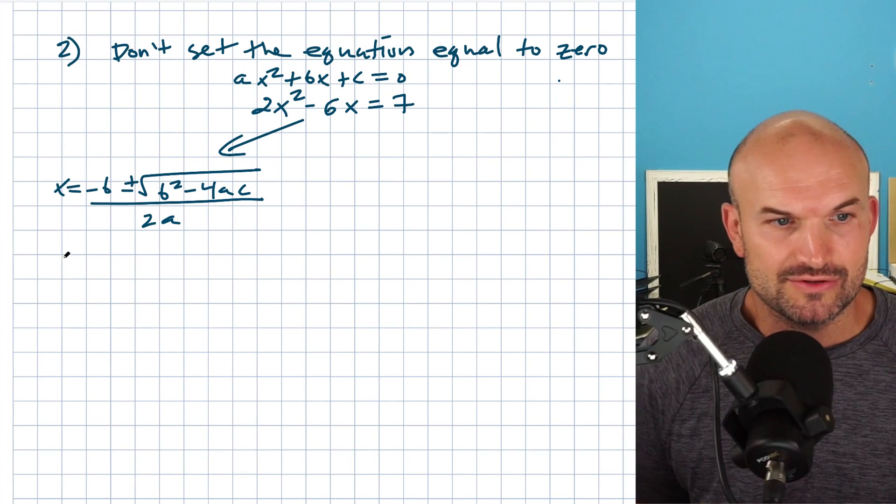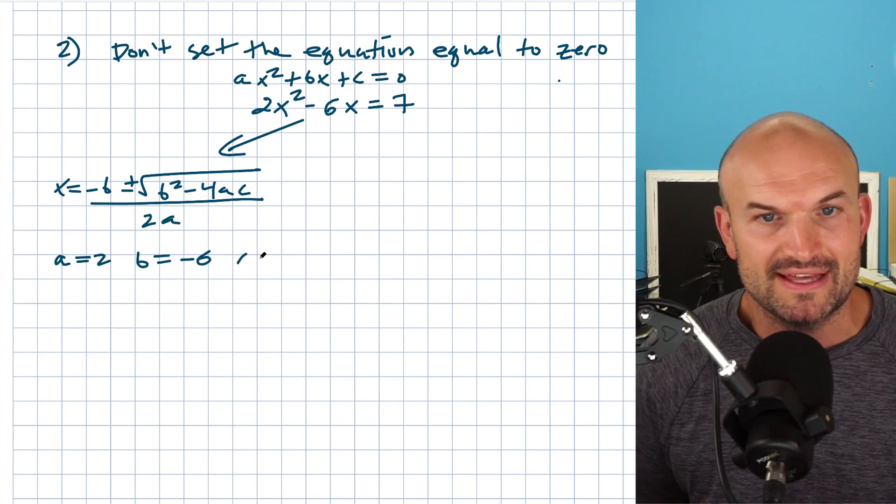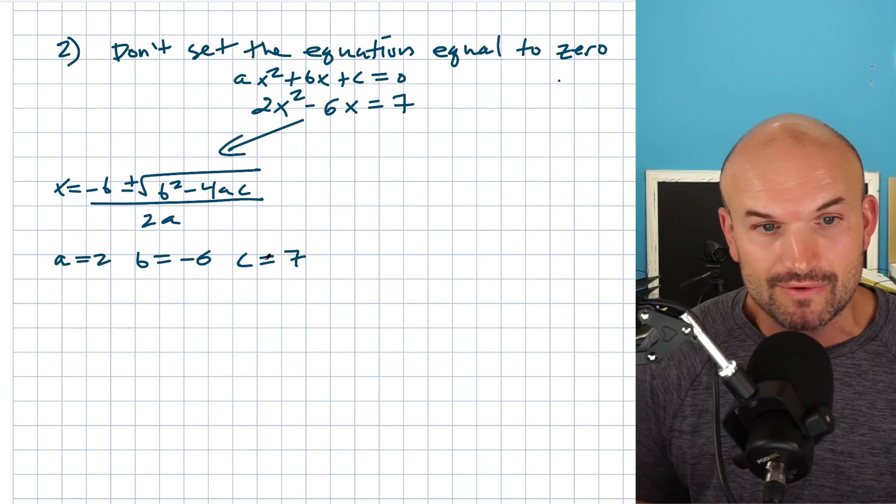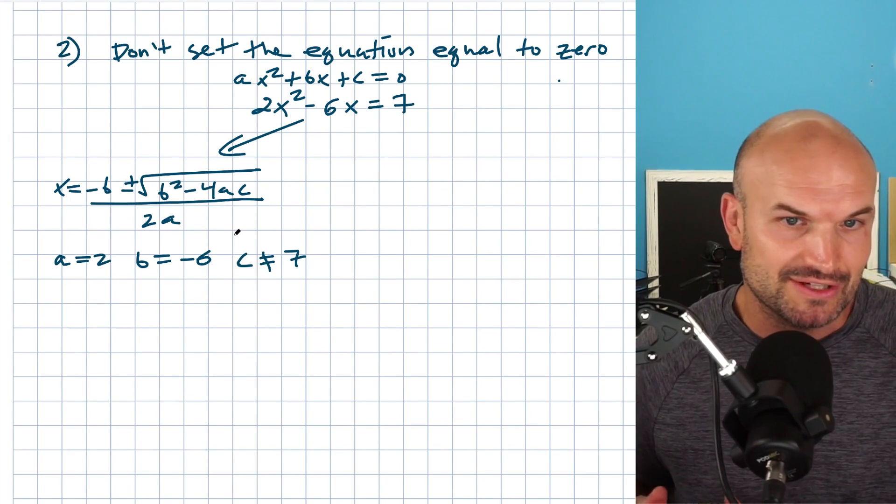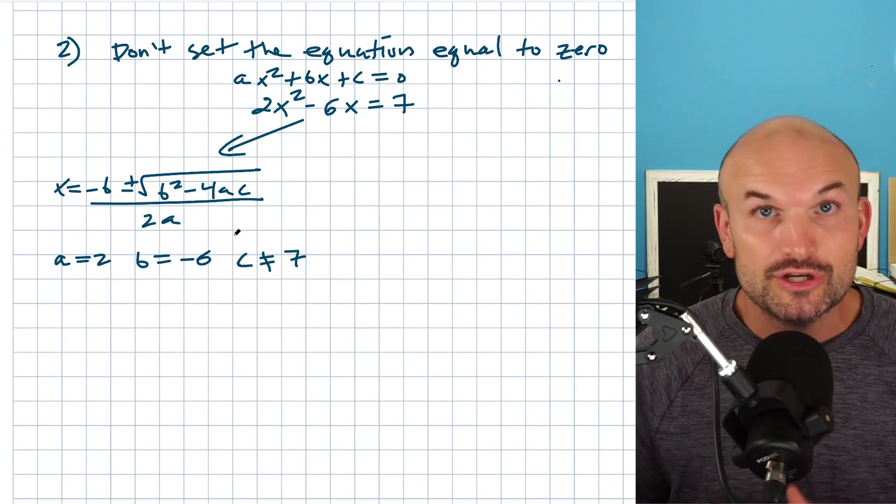So if you're going to say the mistake that students will make is they'll say A is equal to two, B is equal to negative six, and then C is equal to seven. Well, that is incorrect. And guess what? When you plug those values into the quadratic formula, then you're going to get the wrong solutions. So don't do that.